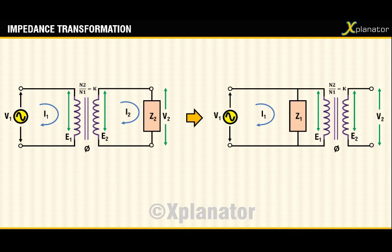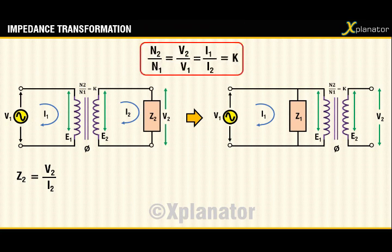The equation for impedance z2 can be written as v2 divided by i2. If this z2 is to be expressed in terms of v1 and i1, then we have to convert v2 and i2 suitably. As per the voltage transformation ratio shown in the red box, the relation between n2 and n1, v2 and v1, and i1 and i2 is given by k.